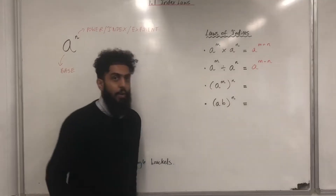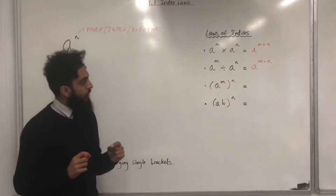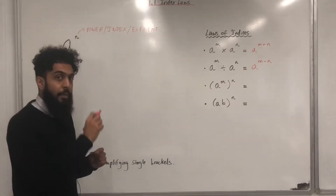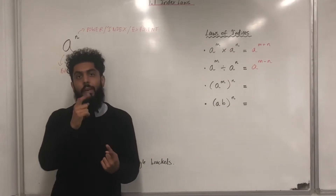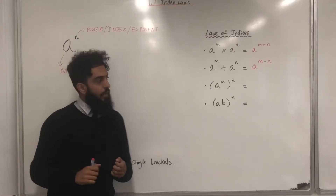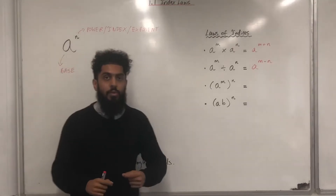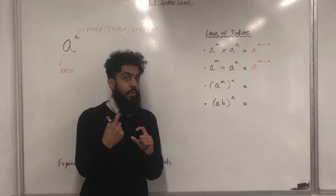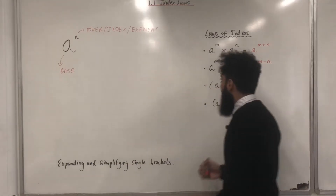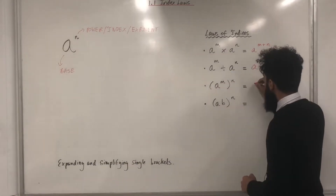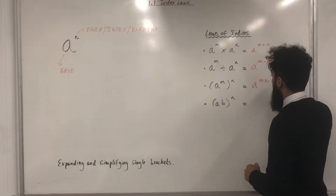The third one — I call this the bracket law. We have A to the power M in brackets to the power N. In this particular case, we need to multiply the inside power with the outside power, giving us A to the power MN.